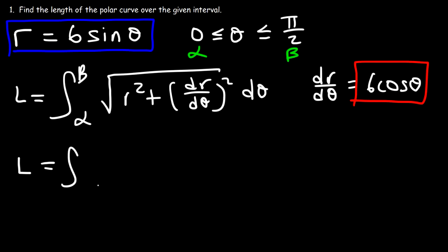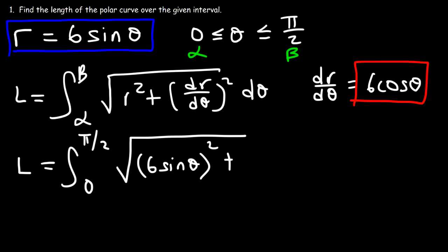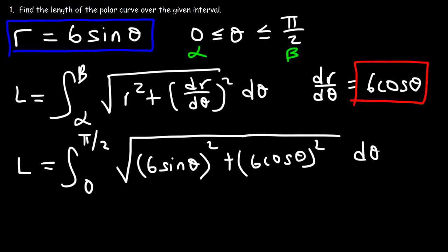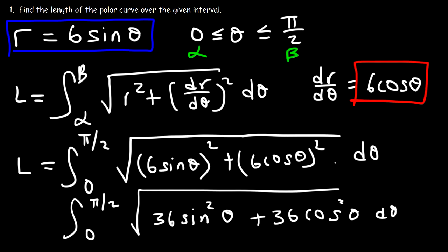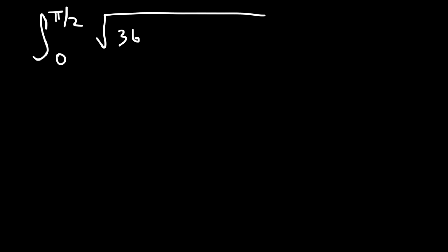We're going to have the integral from 0 to pi over 2, with the square root of r squared — that's (6 sine theta)² — plus (dr/dθ)² — that's (6 cosine theta)². Now 6 squared is 36, so this becomes 36 sine² theta plus 36 cosine² theta. Factoring out the 36, we get the square root of 36 times (sine² theta + cosine² theta).